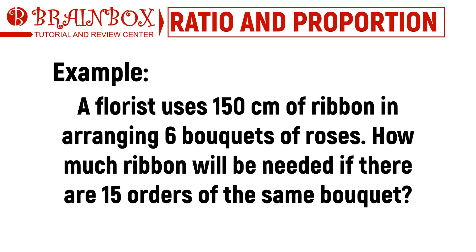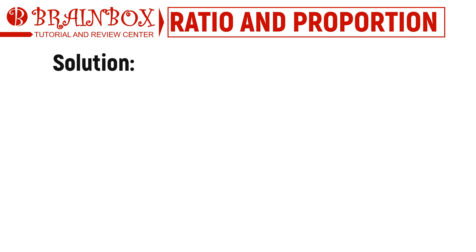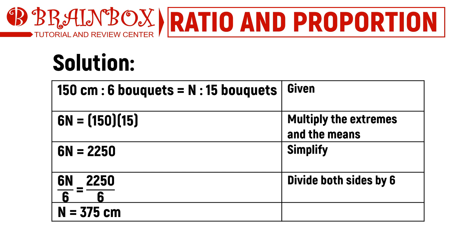A florist uses 150 centimeters of ribbon in arranging six bouquets of roses. How much ribbon will be needed if there are 15 orders of the same bouquet? We can denote the total length of ribbon needed as n. We can now write the proportion as 150 centimeters to six bouquets equals n to 15 bouquets. Multiplying the extremes and the means, we get 6n equals 150 times 15, which simplifies to 6n equals 2250. Dividing both sides by 6 gives us n equals 375.